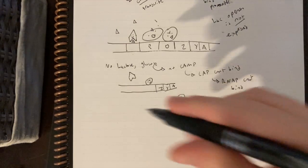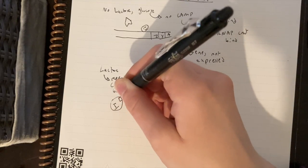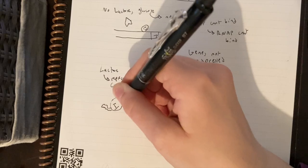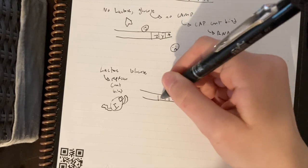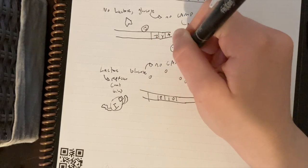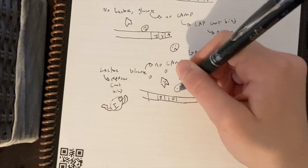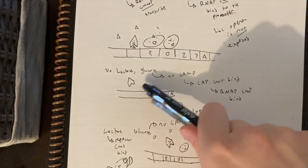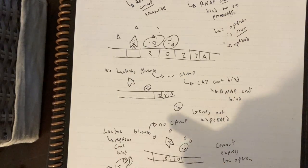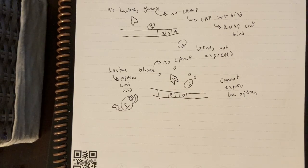Third scenario: lactose and glucose both present. The lactose means the repressor can't bind — it's being changed in shape by lactose and can no longer bind to the DNA, so the operator site is open. However, since there's a lot of glucose, there is no cyclic AMP, which means CAP cannot bind and RNAP also cannot bind. So even though the repressor isn't blocking it, they still can't transcribe. And this makes sense — if there's glucose, it's a much better option than lactose, so you don't want to waste energy on lactose.